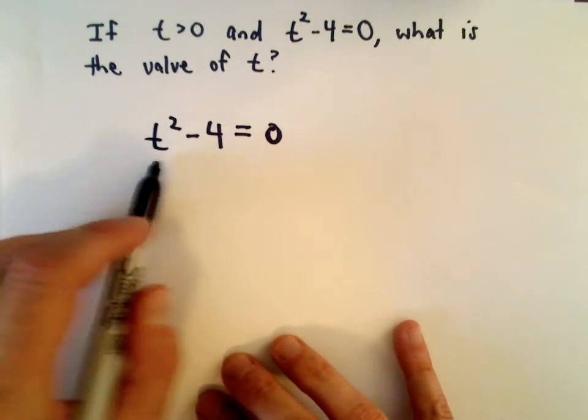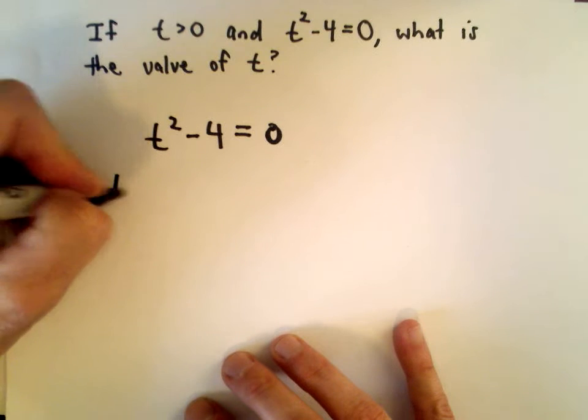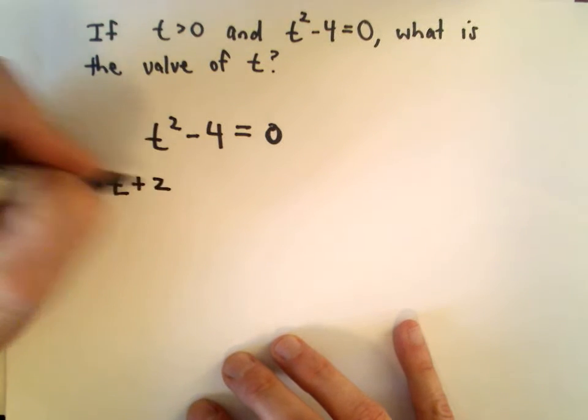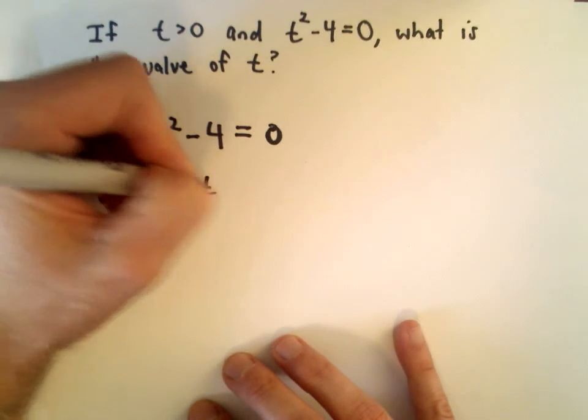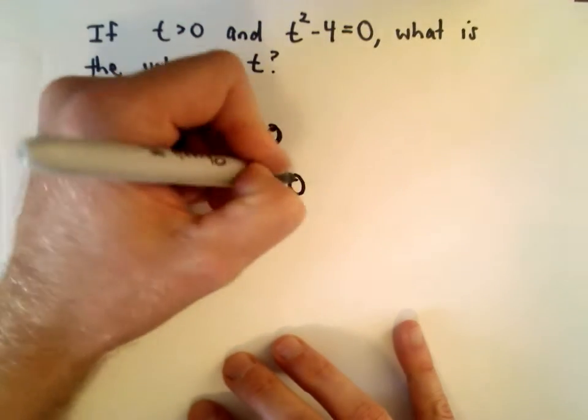That's the whole thing, so two ways to do this. You can either factor the left side. This is a difference of perfect squares: t plus 2 multiplied by t minus 2 equals 0.